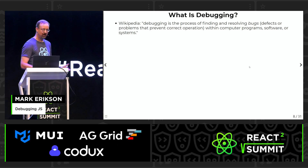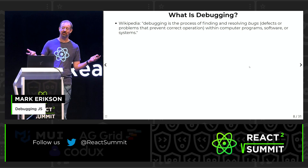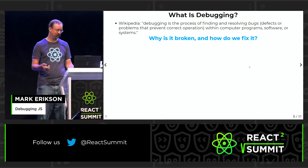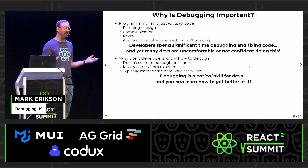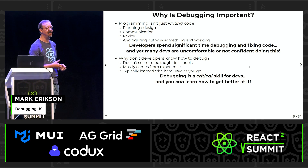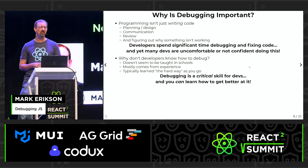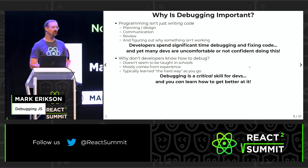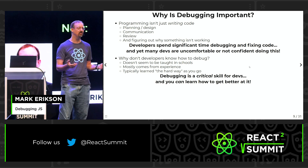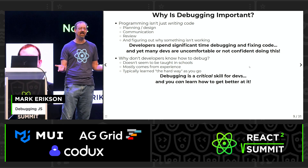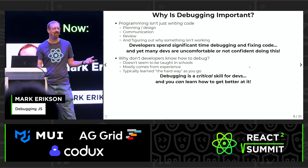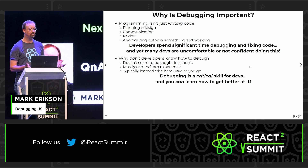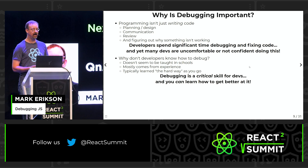Let's talk debugging. Debugging is the process of finding problems in your program and trying to figure out what's going on — in other words, why is it broken and how do we fix it? As programmers, we spend a lot of time doing things other than just writing code: communicating with our team, planning, design, discussions, code review. We spend a lot of time trying to figure out why the code we wrote is not working. And yet, a lot of developers are not actually comfortable doing this. I think the biggest problem is that our industry does not teach people how to debug. Debugging is an absolutely critical skill for developers, and the good news is it is something you can learn and get better at.